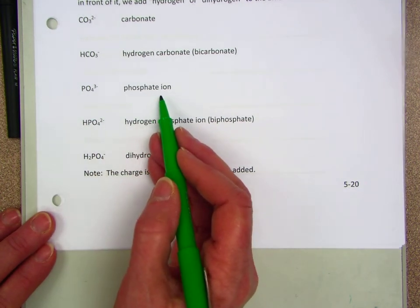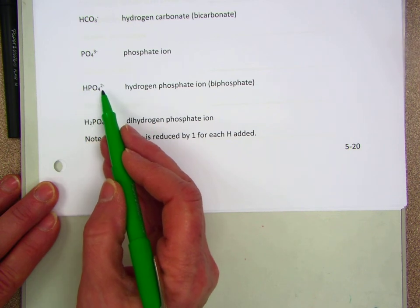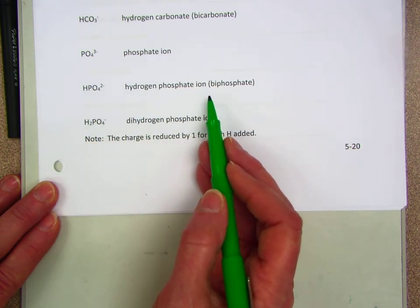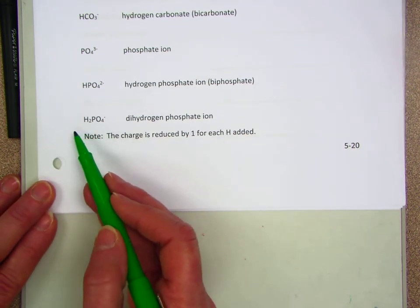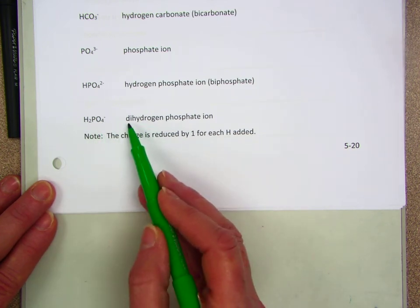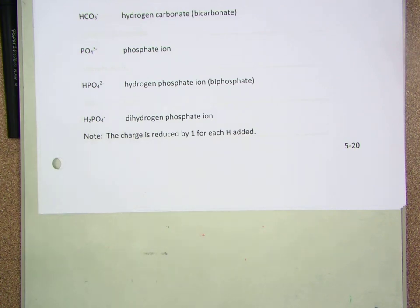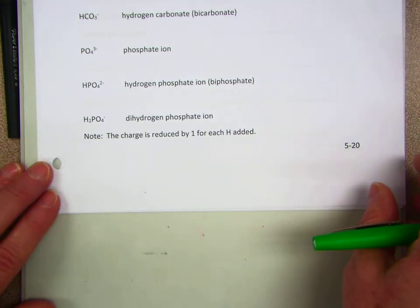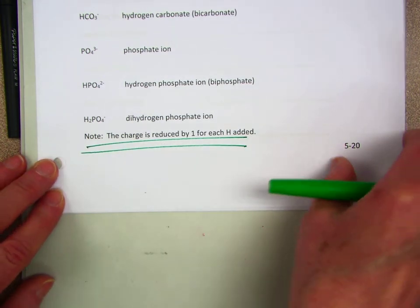Phosphate is PO4(3-). If we add a hydrogen, we get HPO4(2-), and we call it the hydrogen phosphate ion — also called biphosphate. Then if we add two hydrogens, we get H2PO4(-1), and we call that the dihydrogen phosphate ion. You could technically call it dibiphosphate, but I've never heard anyone do that. It's dihydrogen phosphate. Note that each time we add a hydrogen, the charge goes down by one on that ion.